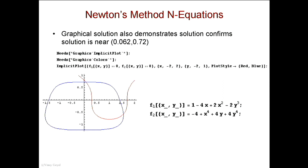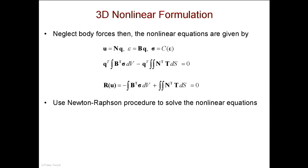Regarding multiple solutions: where you begin your guess matters. If I begin my guess near one intersection I'll converge to that solution rather than another. The lesson learned is that you're going to converge to an equilibrium state closest to the initial guess, because you're basically searching for a solution in that vicinity.